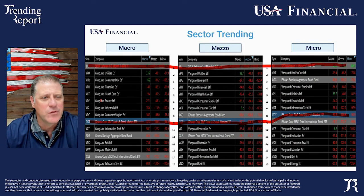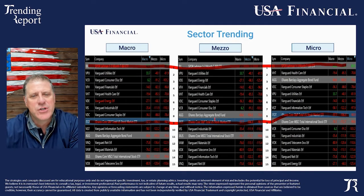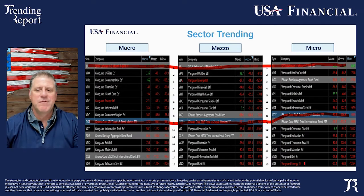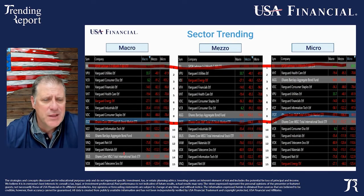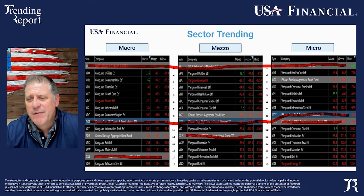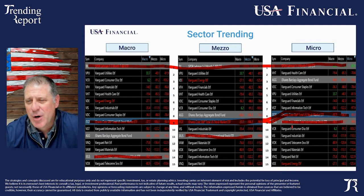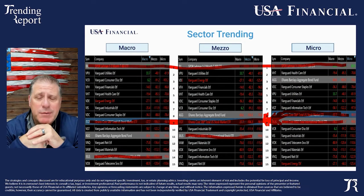Energy was in the number six spot on the macro, jumped up to number three on the meso, but then look at the micro — it's in the number fifteen spot. The short term has been very tough on certain subsets, energy being the classic example from a sector perspective. Total international stock was ranking very low on the macro, worked its way up a little on the meso and a little further on the micro. The overall U.S. stock market is still coming in above the international market, but you can see on the micro it closed the gap, sitting at number eight and number nine.